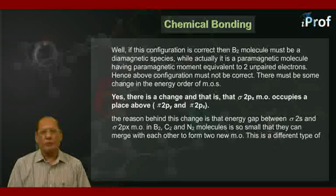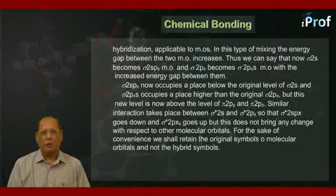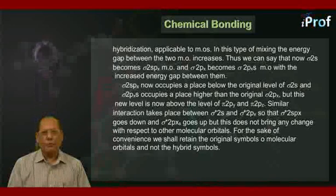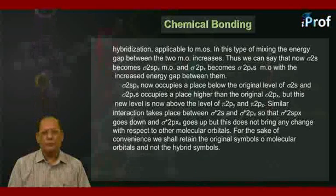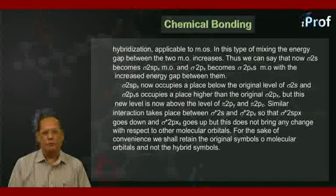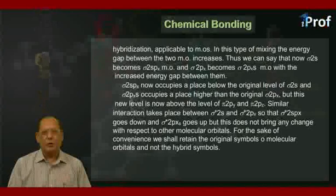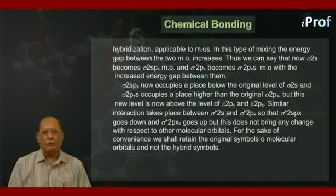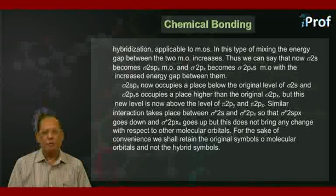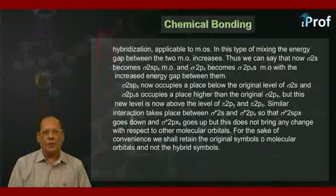This is a different type of hybridization applicable to molecular orbitals. In this type of mixing the energy gap between the two molecular orbitals increases. Thus we can say that now σ2s becomes σ2s-pₓ molecular orbital and σ2pₓ becomes σ2pₓ molecular orbital with the increased energy gap between them.